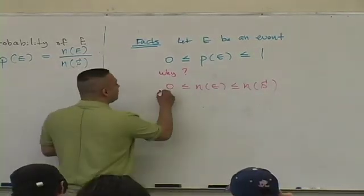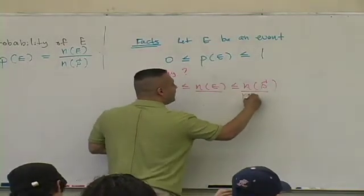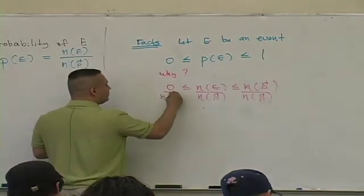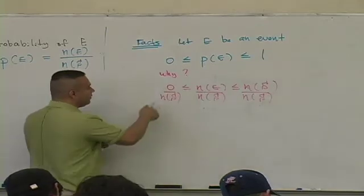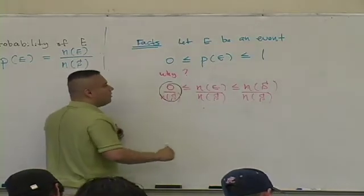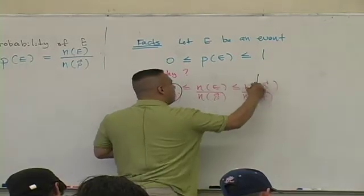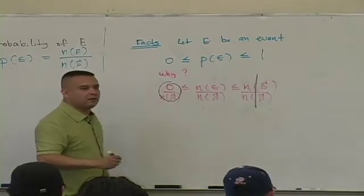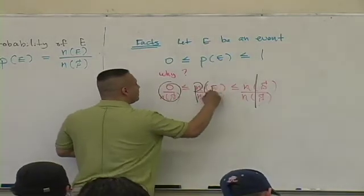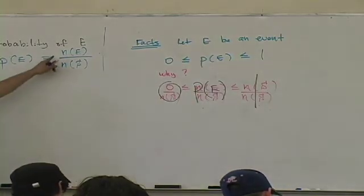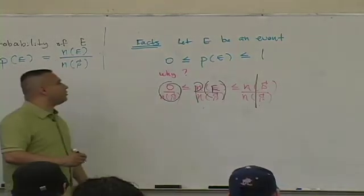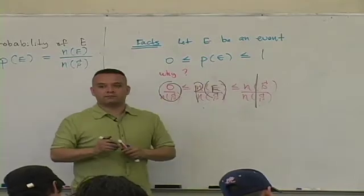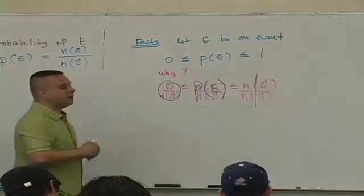And if now I divide everything here by n(s), do you guys know what happens? What's 0 divided by any number? Isn't this 0? What's any number divided by itself? Isn't this 1? What is n(e) over n(s)? Isn't that the definition of the probability of an event? So what I just demonstrated was that probabilities live between the value of 0 and the value of 1.